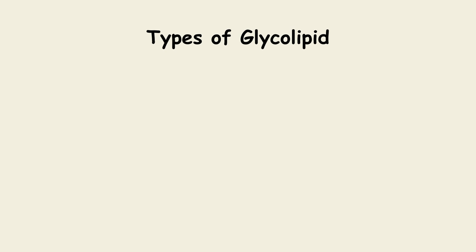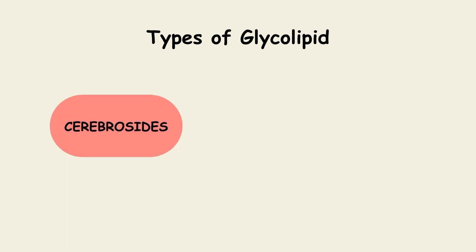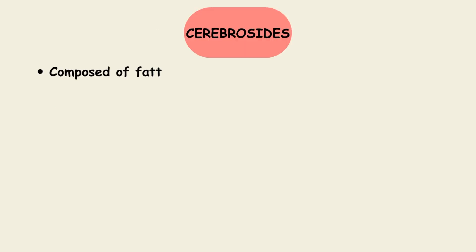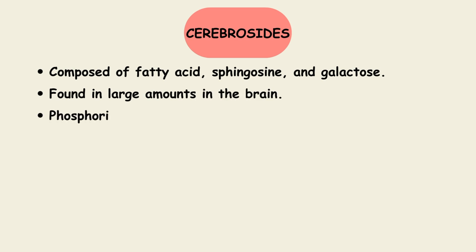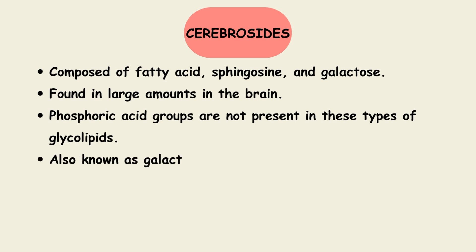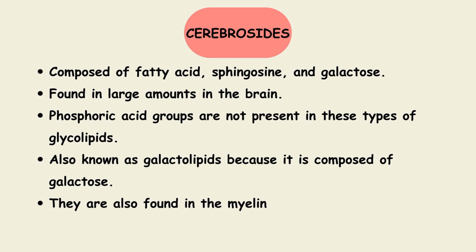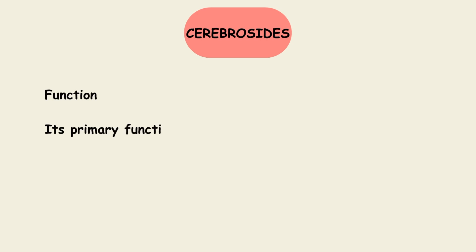Now let us see the types of glycolipids. Glycolipids are mainly cerebrosides and gangliosides. Cerebrosides are composed of fatty acids and galactose. These are found in large amounts in the brain. Phosphoric acid groups are not present in these types of glycolipid. They are also known as galactolipid because of the galactose. They are also found in the myelin sheath of the nervous system. The primary function of cerebrosides is to protect the nerve cells.